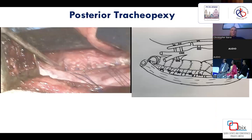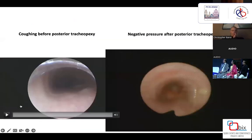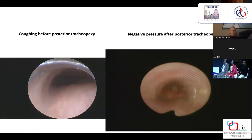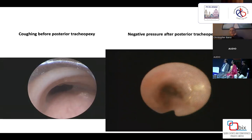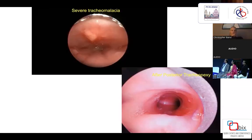An anterior and posterior tracheobronchomalacia repair was designed to utilize sutures to pull open the trachea to the anterior spinal ligament, supporting the trachea and giving it rigid structure with direct anterior support. This shows an example of posterior tracheopexy from a lateral thoracotomy position, and a bronchoscopy before and after posterior tracheopexy with negative pressure applied after — the airway is completely supported and stays open. Here is another example of severe tracheomalacia and the result after posterior tracheopexy.